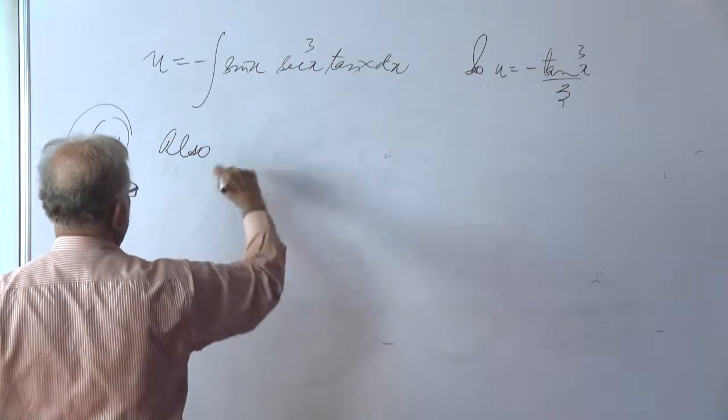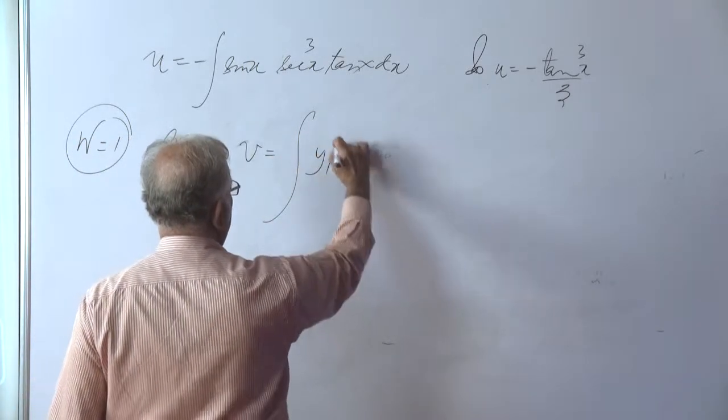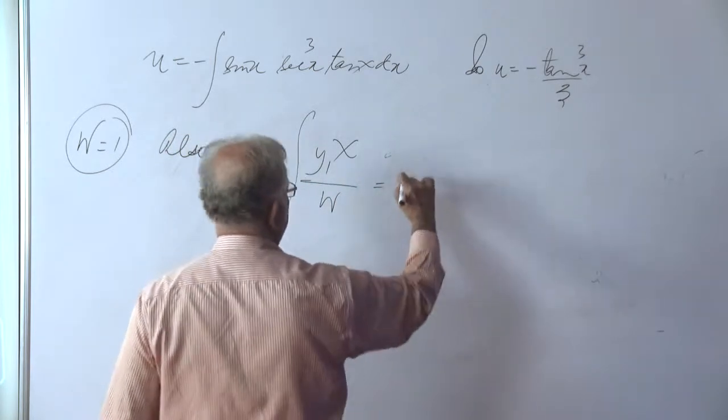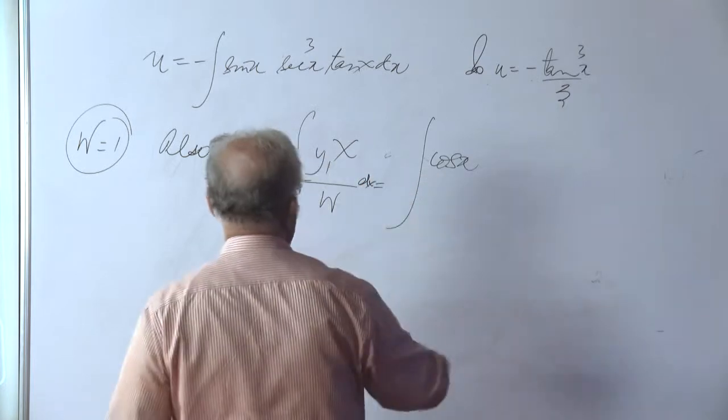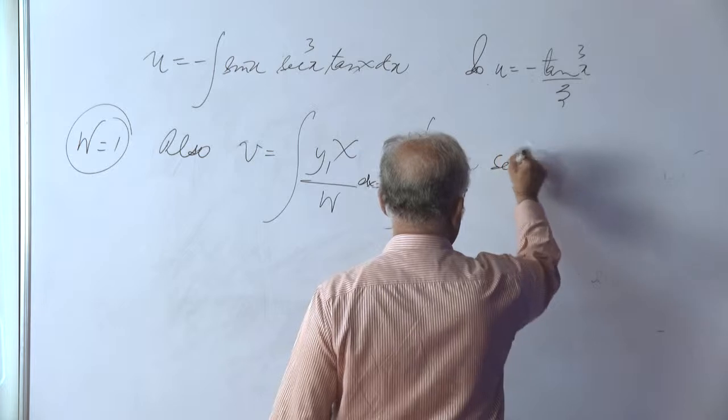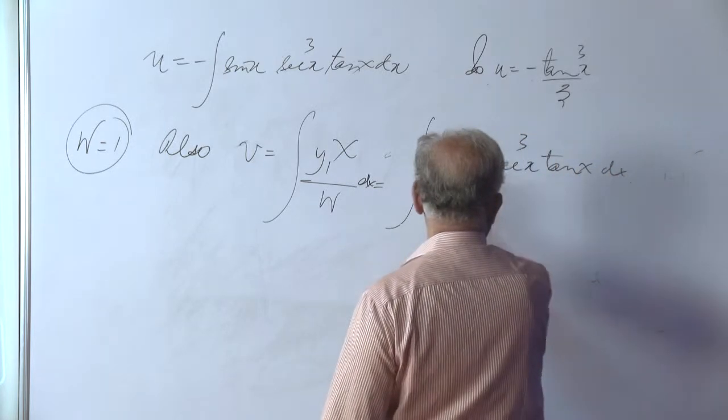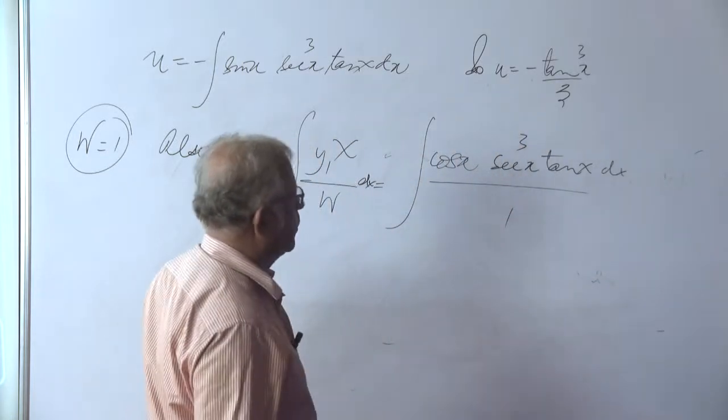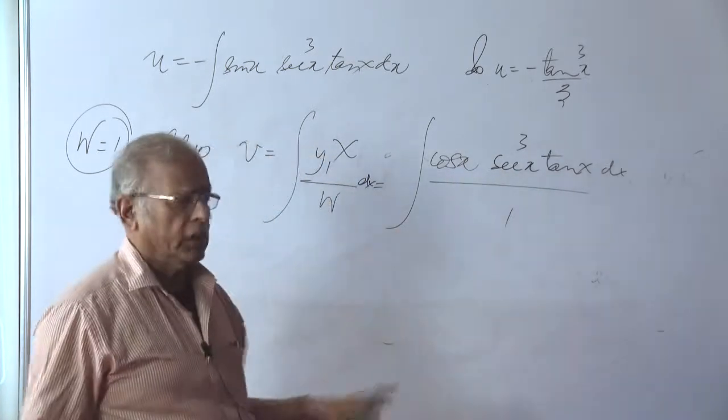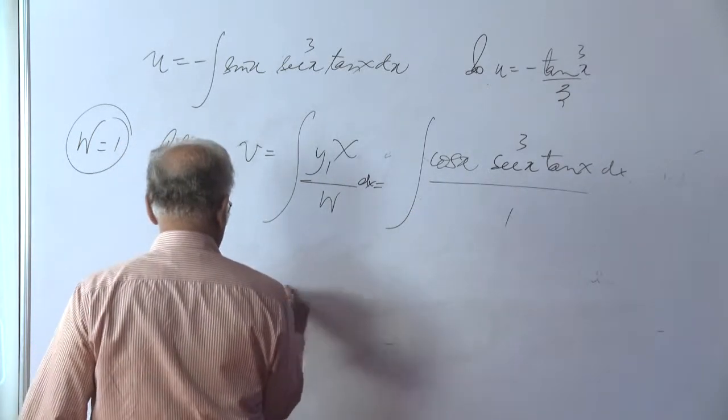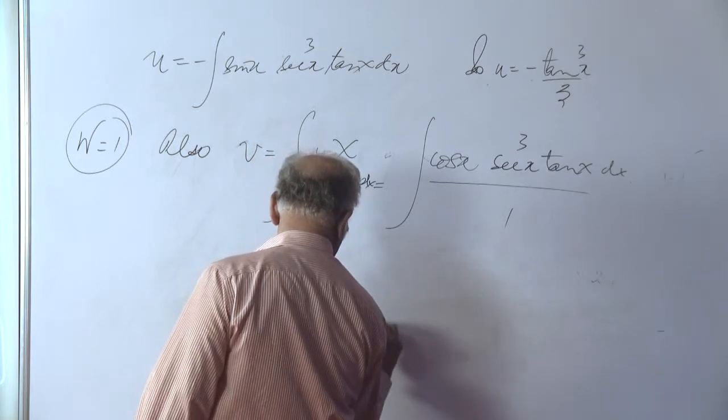Also, we can recall that the v is determined by integral y1 capital X over Wronskian. That is, cos x was our y1. Of course, with respect to x. Capital X is sec cube x tan x dx divided by Wronskian is 1. We are handling nothing but tan x sec squared x because cos and 1 sec borrowed from here. Cos and sec are reciprocals of each other. So, they cancel each other out. So, therefore, this leads us to the integral of tan x sec squared x dx.